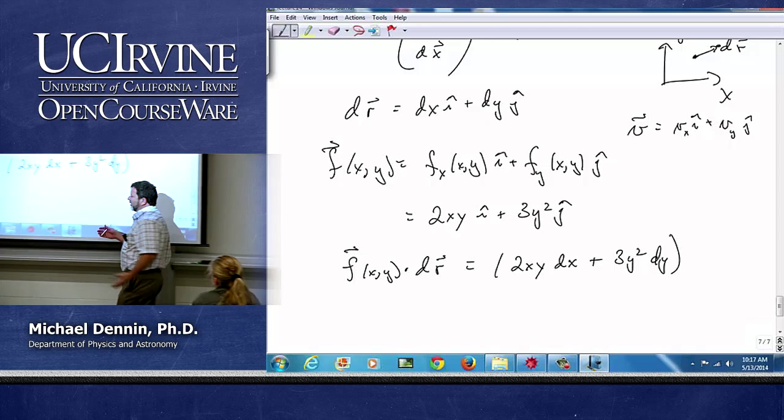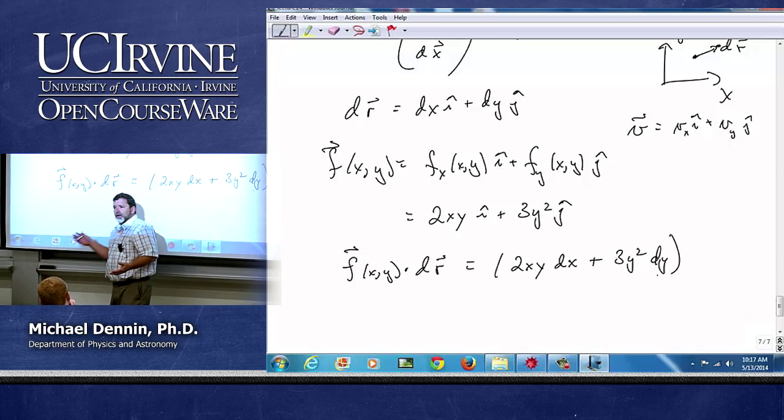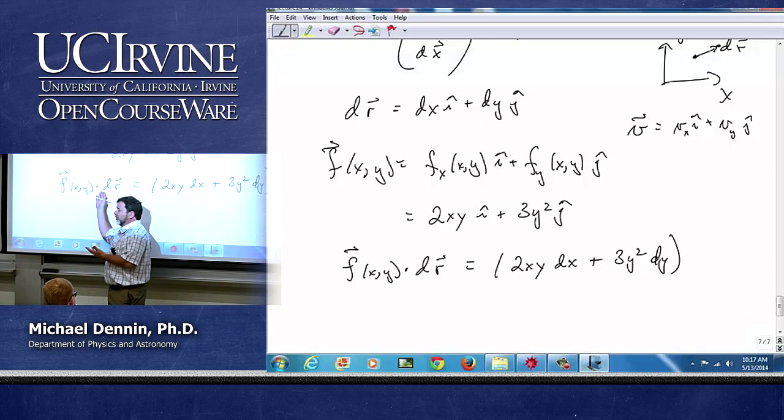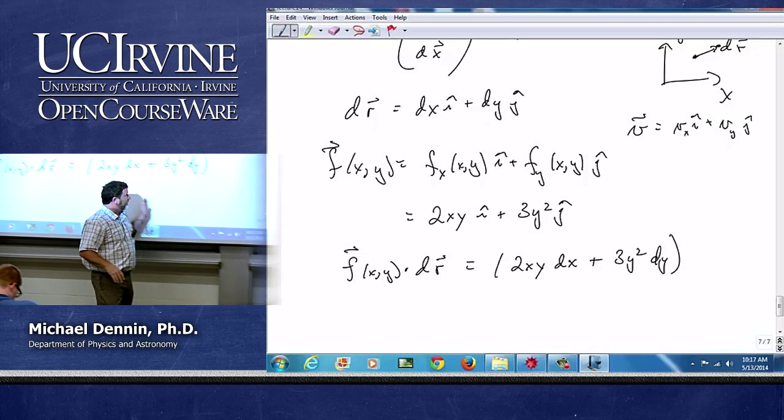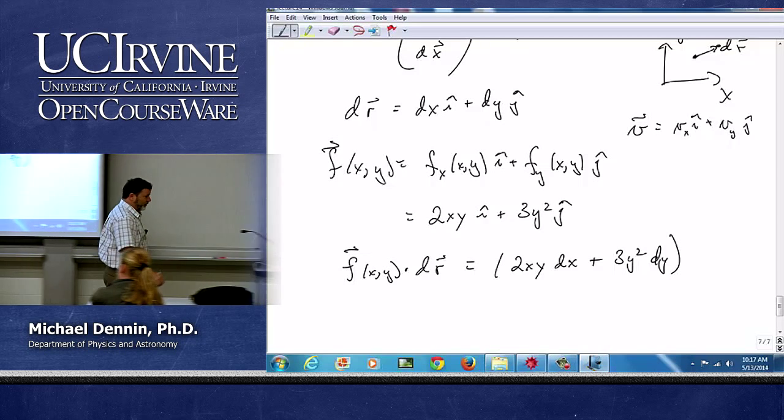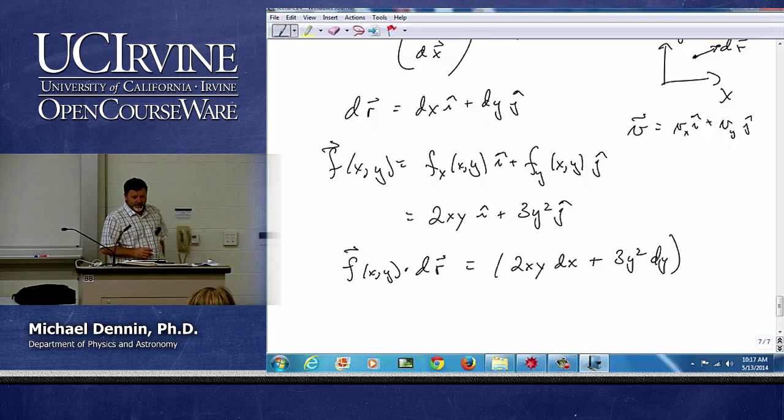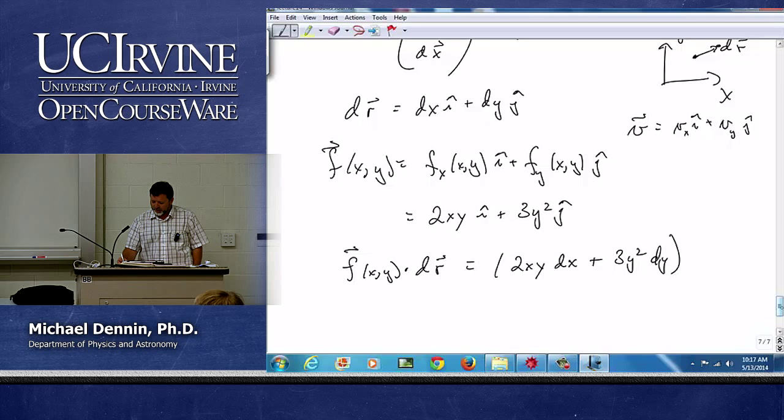Now, there might be some where the projection is not so easy, and you might have to, and this is why we're also going to learn our vector identities, and you might turn this into a different type of integral, but fundamentally if you're going to have to do it by hand, that's what you do. And we need, again, our parametrization of our curve.